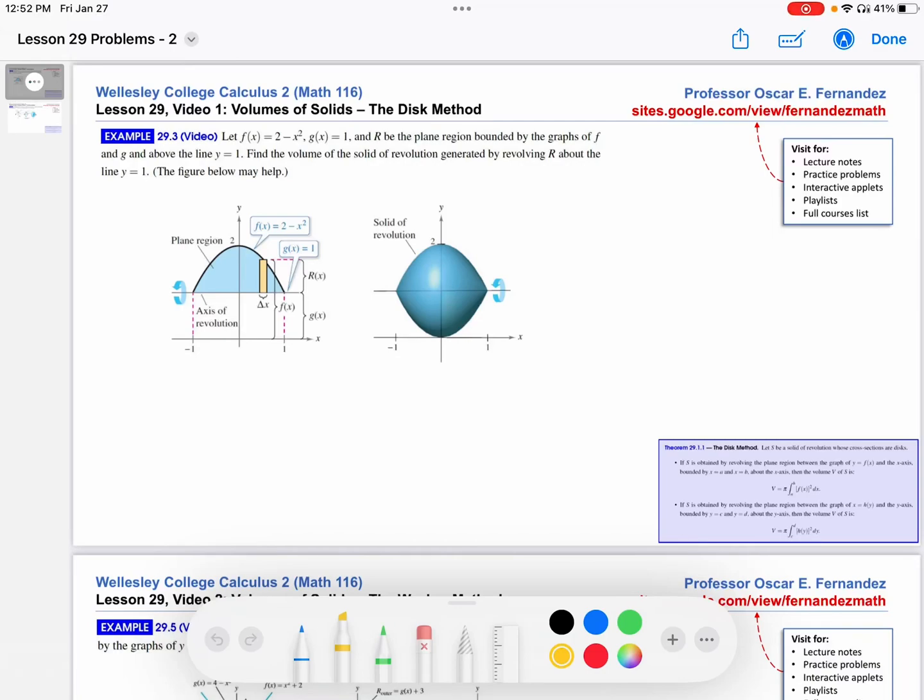Hi, this is Professor Fernandez, and in this video we're going to work through an example of finding the volume of a solid of revolution using the disk method, but where the axis of revolution is not the x-axis. So this example comes from the notes from Lesson 29 in this Calc 2 course. You'll find those notes here, along with these other resources.